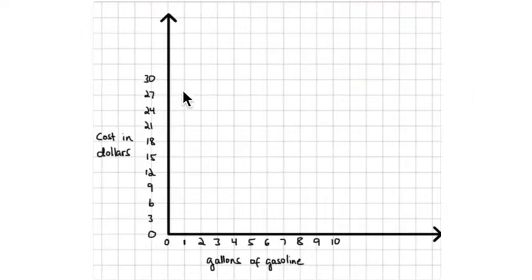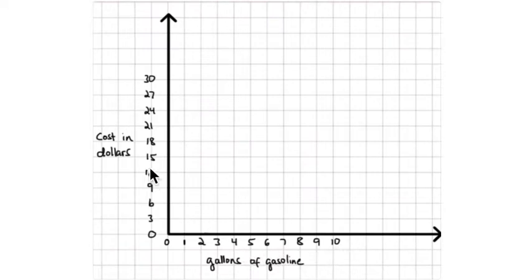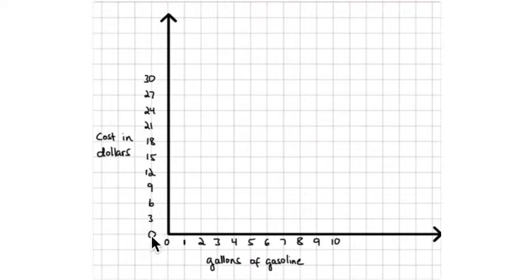To put this on a graph, you first decide what units to use for each axis. For the x-axis, gallons of gasoline goes from zero to ten gallons. For the y-axis, cost in dollars — since the rate is two dollars and ninety-five cents per gallon, you don't want to label by exact multiples of two ninety-five. Instead, round up to the nearest convenient value and count by threes: three, six, nine, twelve, fifteen, up to thirty.